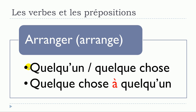Next verb: arranger. First structure — no preposition — arranger quelqu'un or arranger quelque chose. Second structure: arranger quelque chose à quelqu'un. So: arranger quelqu'un, arranger quelque chose, arranger quelque chose à quelqu'un.